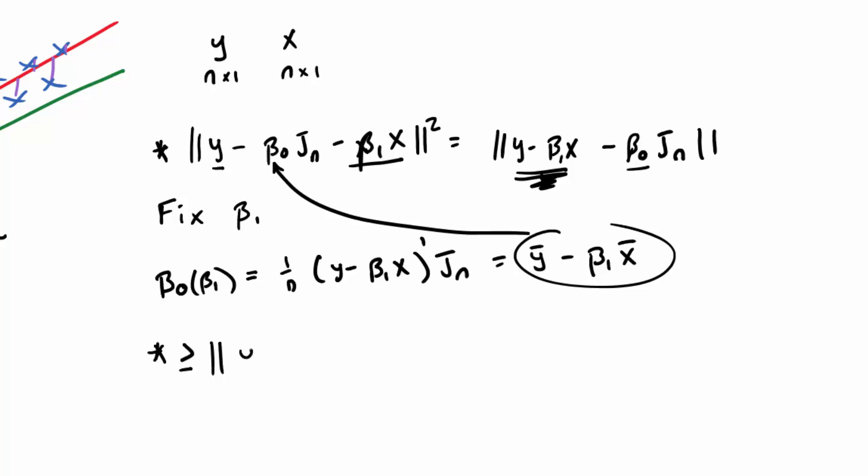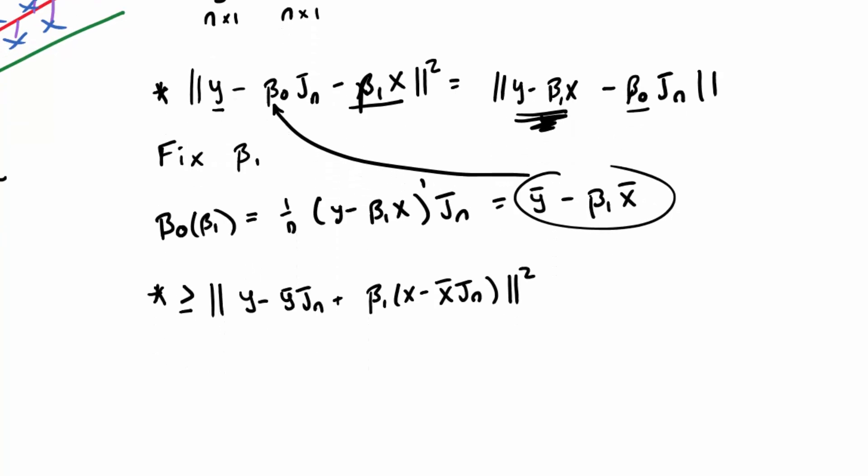If we plug that beta naught back in, I'm going to rearrange some terms a little bit. So we get y minus y bar jn plus beta 1 x minus x bar times jn. So I just did some rearranging of terms, so you can do that on your own if you don't see it immediately.